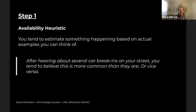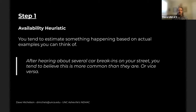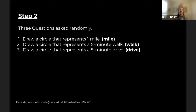The questions can be problematic because they can trigger cognitive psychology biases. One of them is the availability heuristic — people tend to estimate something happening based on actual examples they can think of. With crime, if you hear about a bunch of break-ins on your street, you start to believe it's more common than it really is. Conversely, if you never hear about crime in your neighborhood, you tend to think crime is lower than it really is. That probably explains why people would say 'why is there so much crime when you go out a mile?'